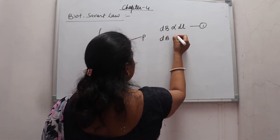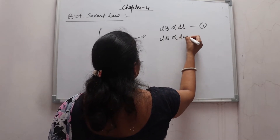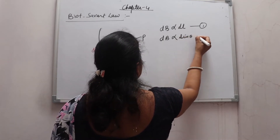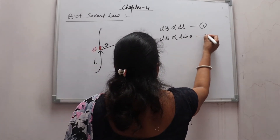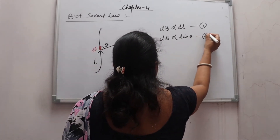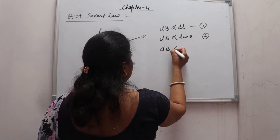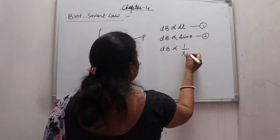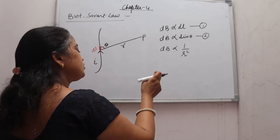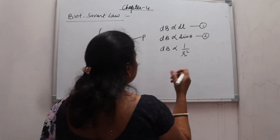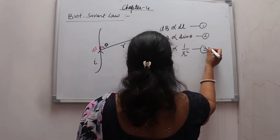DB is proportional to sin theta. What is the angle for sin theta? It is the angle between DL and R. This is number second. DB is proportional to 1 upon R square. If you increase the distance, then the value of DB will decrease, and if you decrease the distance it will increase. Number third.